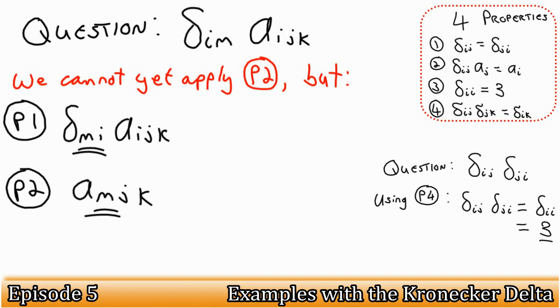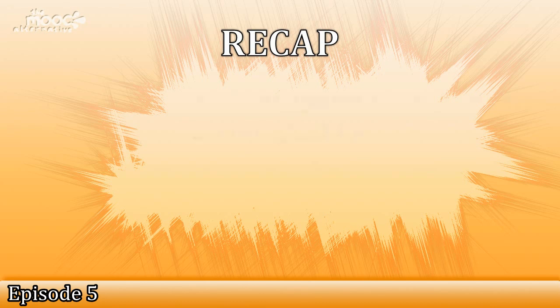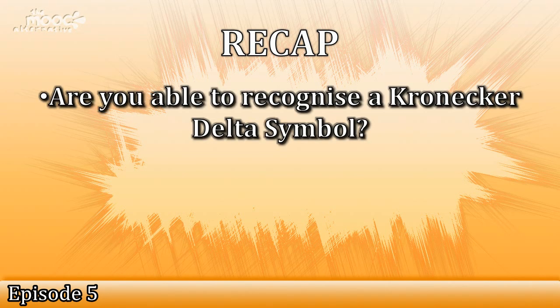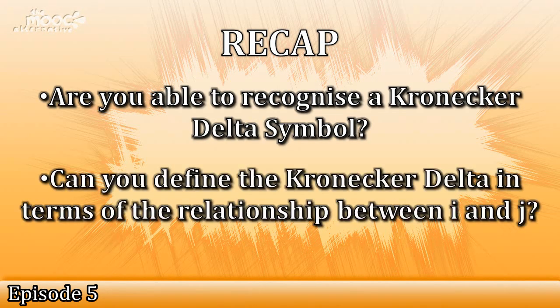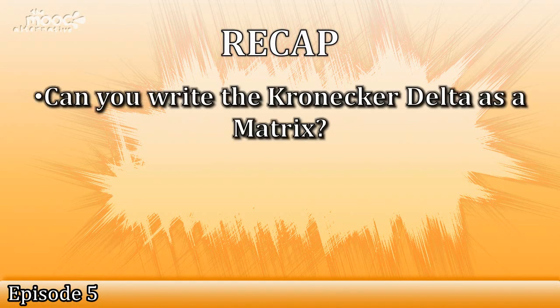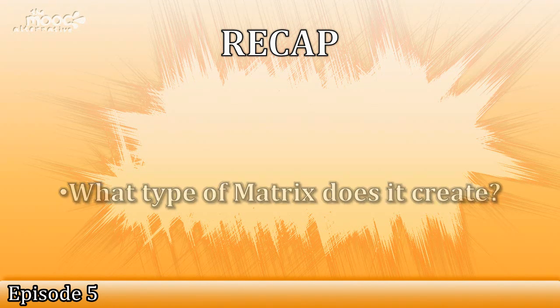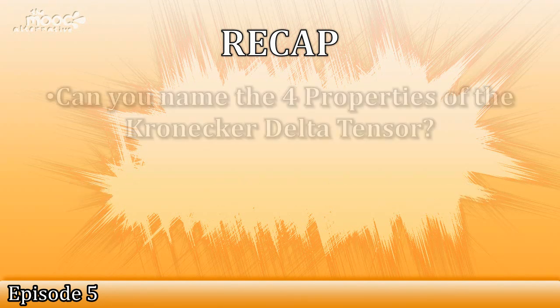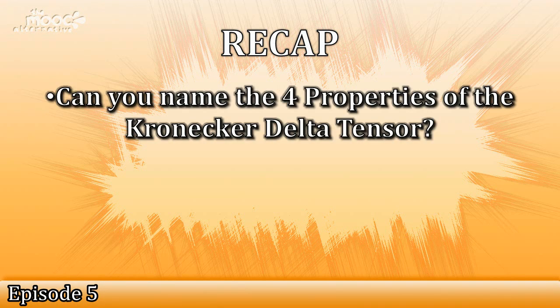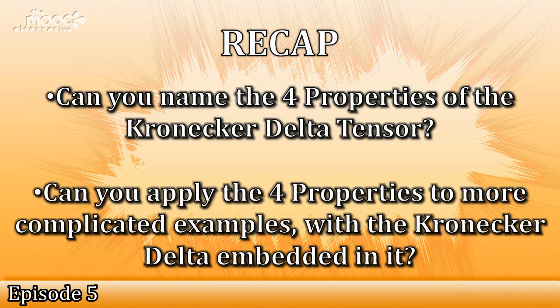That's almost all for episode 5. Before we finish, let's have a little look over what we covered in this video. Are you able to recognize a Kronecker delta symbol? Can you define the Kronecker delta in terms of the relationship between i and j? Can you write the Kronecker delta as a matrix? What type of matrix does it create? Can you name the four properties of the Kronecker delta tensor? Can you apply the four properties to more complicated examples, with the Kronecker delta embedded in it?